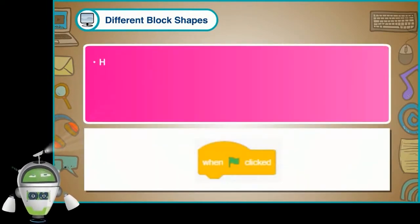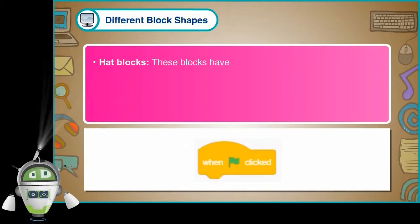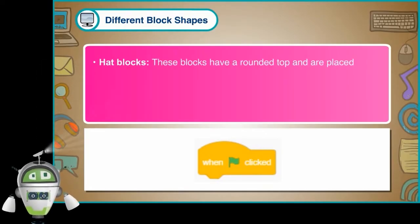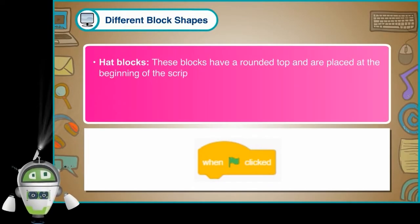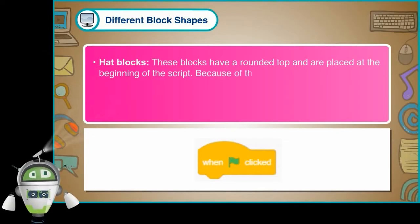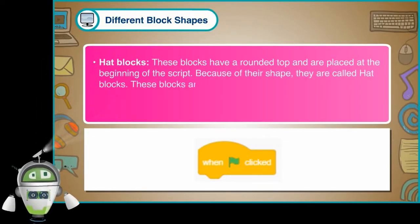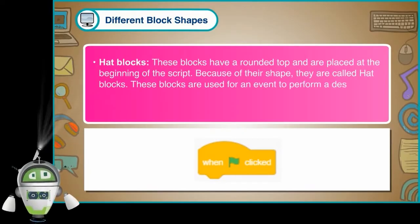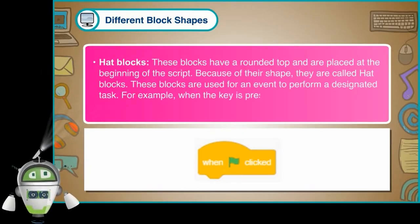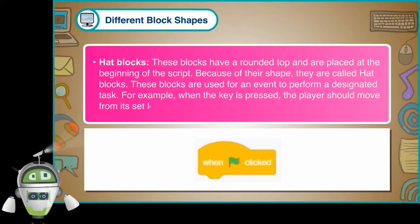Hat Blocks: These blocks have a rounded top and are placed at the beginning of the script. Because of their shape, they are called Hat Blocks. These blocks are used for an event to perform a designated task. For example, when the key is pressed, the player should move from its set location.